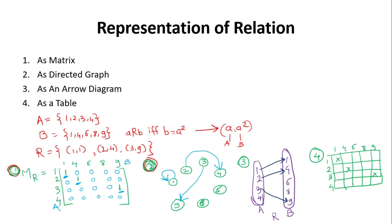The second representation is a directed graph. We keep a node for each distinct number from both sets. If a relation goes from a to b, we draw an arrow from a to b. So: 1→1 is a self-arrow, 2→4 is an arrow from node 2 to node 4, and 3→9 is an arrow from node 3 to node 9.